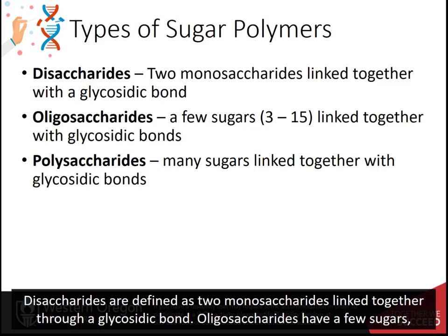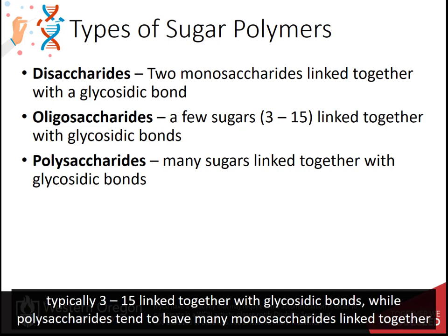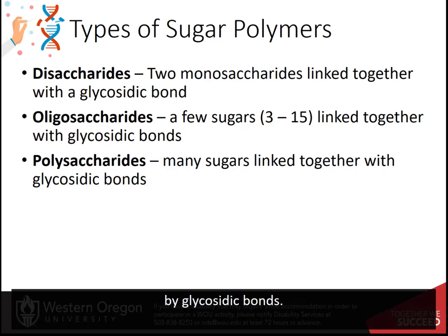Disaccharides are defined as two monosaccharides linked together through a glycosidic bond. Oligosaccharides have few sugars, typically 3 to 15, linked together with glycosidic bonds, while polysaccharides tend to have many monosaccharides linked together by glycosidic bonds.